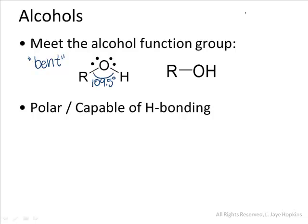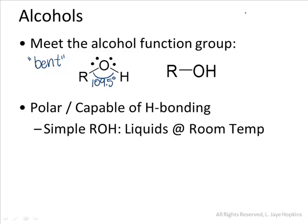For one thing, even the simplest alcohols tend to be liquid at room temperature. If we think back to alkanes like methane and ethane, those very simple alkanes were gas at room temperature. In alcohols such as methanol and ethanol, because they have hydrogen bonding, each alcohol molecule is strongly attracted to other alcohol molecules. The consequence is that simple alcohols tend to be liquids at room temperature.